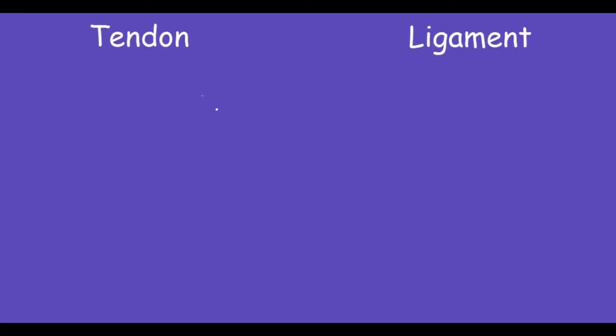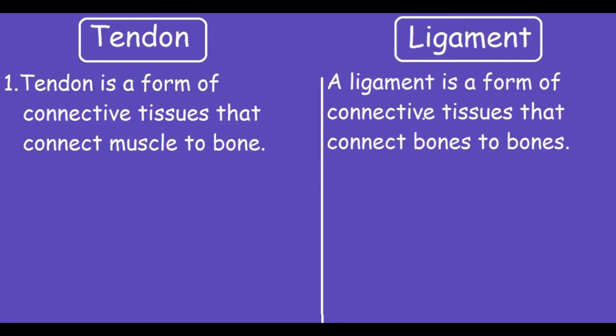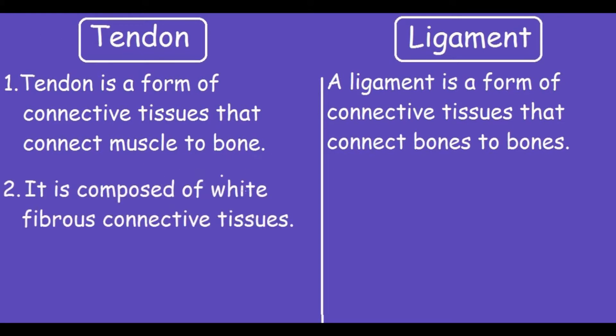Let's study the differences between a tendon and a ligament. A tendon is a form of connective tissue that connects muscle to bones, while a ligament is a form of connective tissue that connects bones to bones.